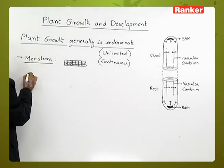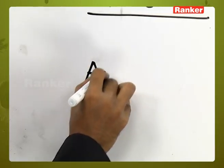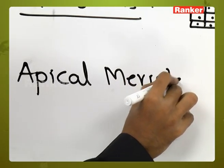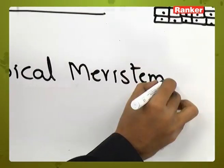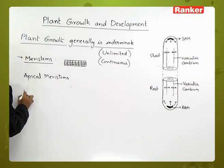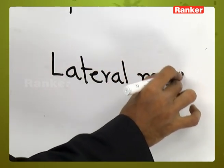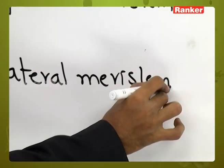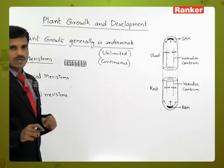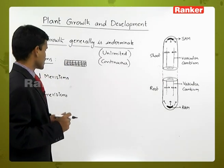Based on location, two types of meristems are present: apical meristems and lateral meristems.